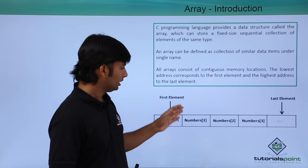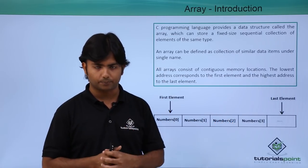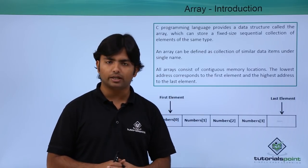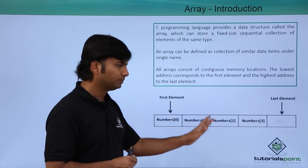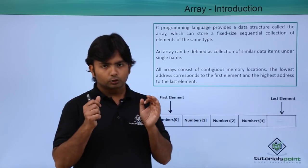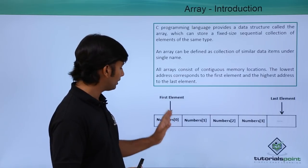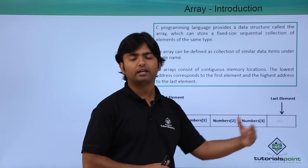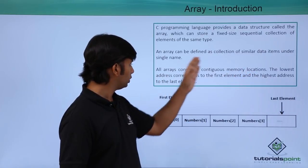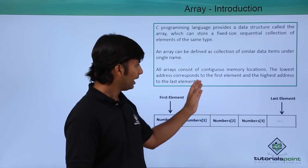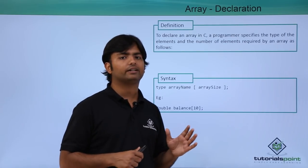An array can be defined as similar data elements under a single name. If the name of the array is 'numbers', all elements inside are part of that array. To access an individual element we use an index inside square brackets. The index in an array begins at 0, so the first element is at index 0, then 1, 2, 3, and so on. The lowest memory address corresponds to the first element (index 0) and the highest address to the last element.